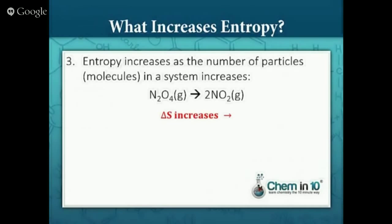Number three: entropy increases as the number of particles in a system increases. When we go from dinitrogen tetraoxide to two molecules of nitrogen dioxide, we are increasing the number of particles — going from one molecule to two — so entropy is increasing.